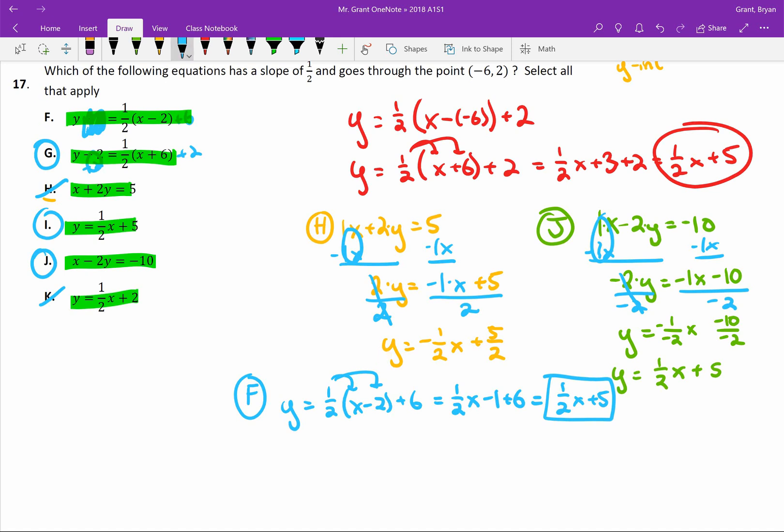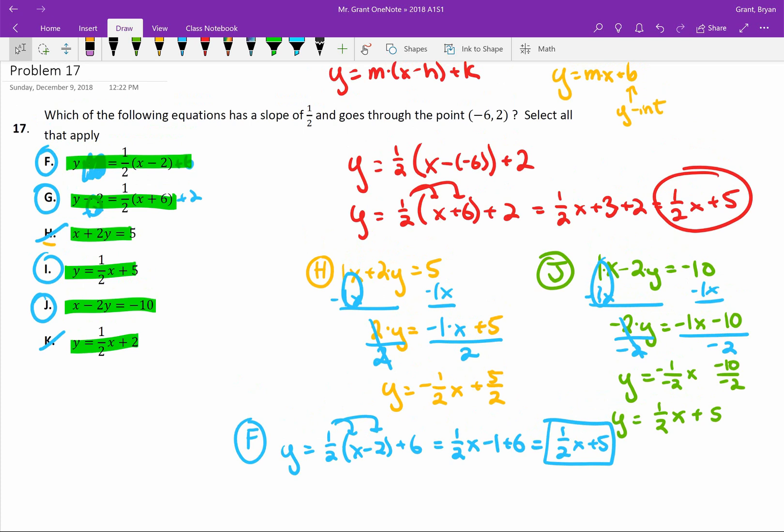So we actually have four different equations here that are all the same thing, just written in a different form. Technique that we used, started with HK form. Got y by itself in each equation. And then distributed to get rid of the parentheses.